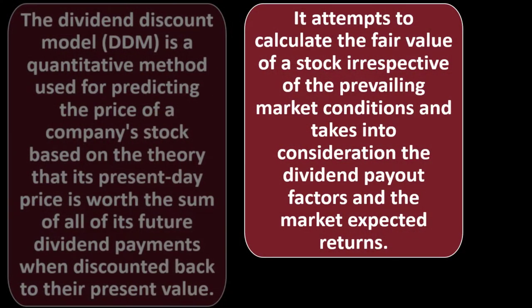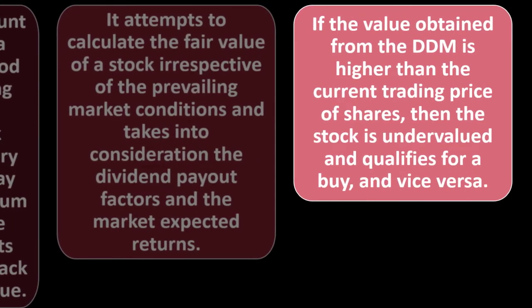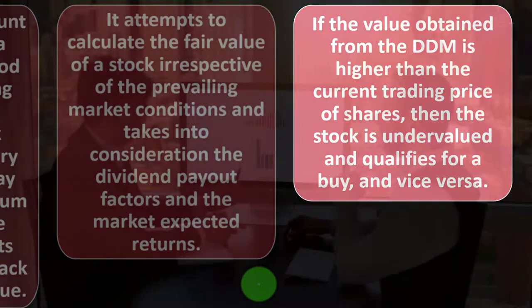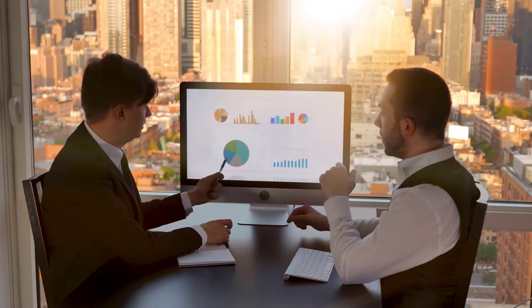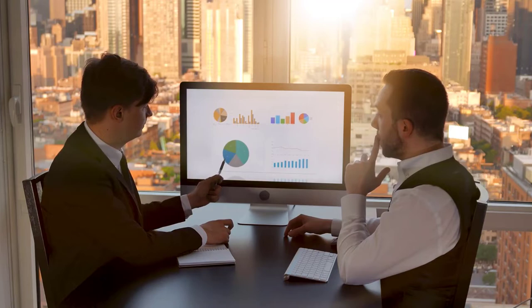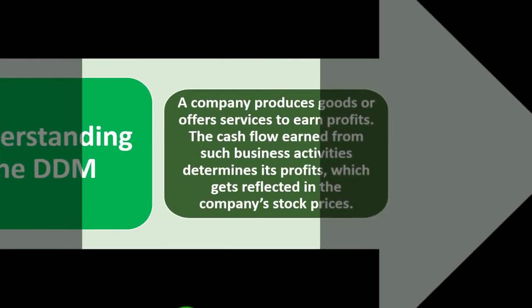The DDM attempts to calculate the fair value of a stock irrespective of prevailing market conditions, taking into consideration dividend payout factors and market-expected returns. If the value obtained from the DDM is higher than the current trading price of shares, the stock is undervalued and qualifies for a buy — or vice versa.